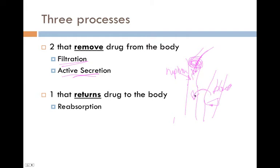That's called active secretion. So this is moving drug out. Then finally, in the distal part of the tubule, we can have drug reabsorbed back into the body, and that's going to return the drug back into the blood, isn't it? So we have two that are removing and one that returns.